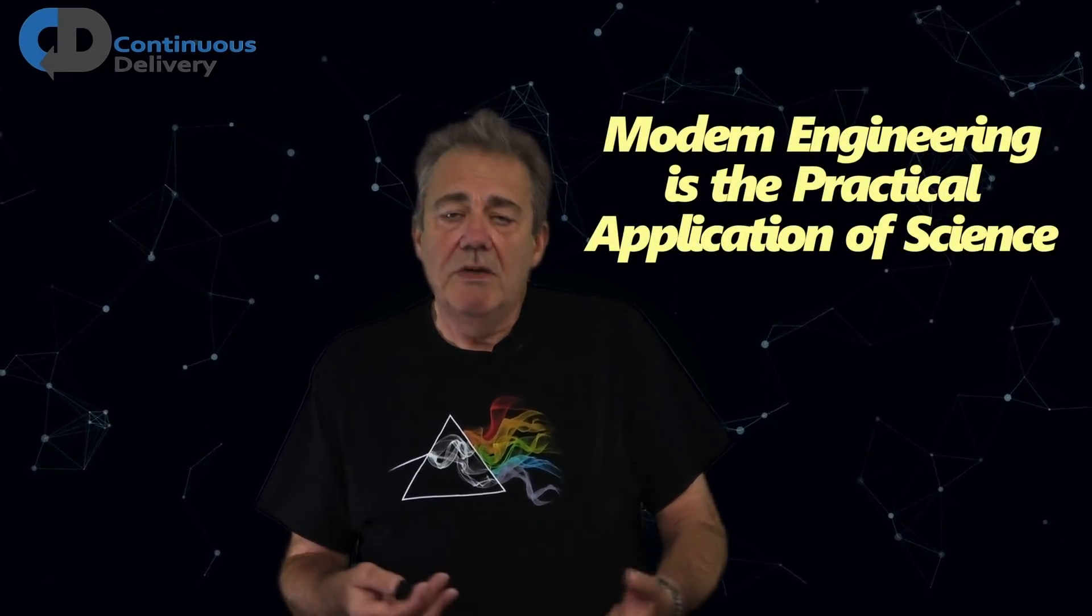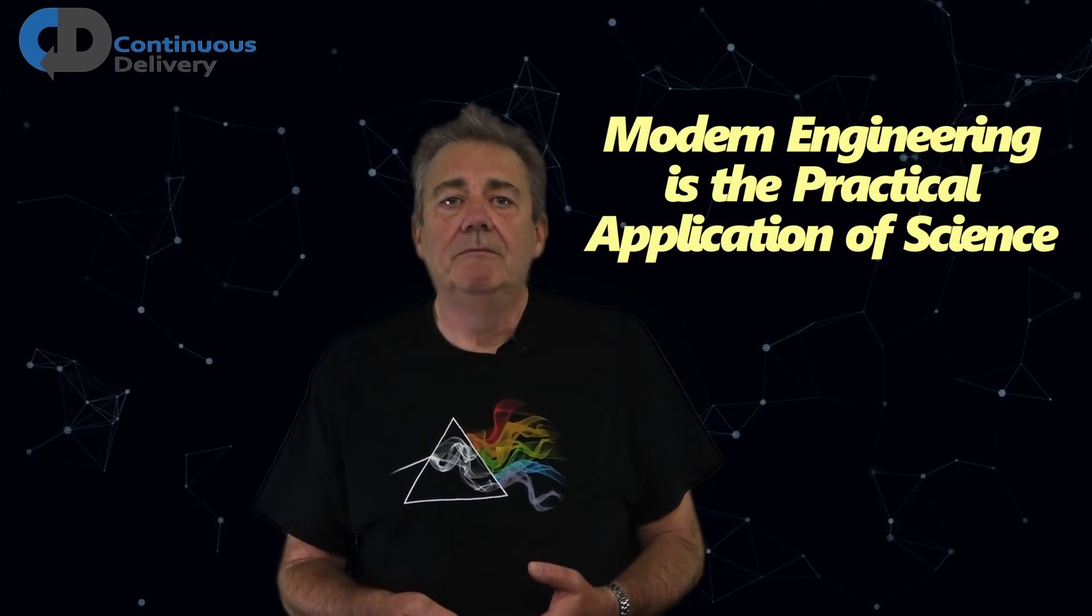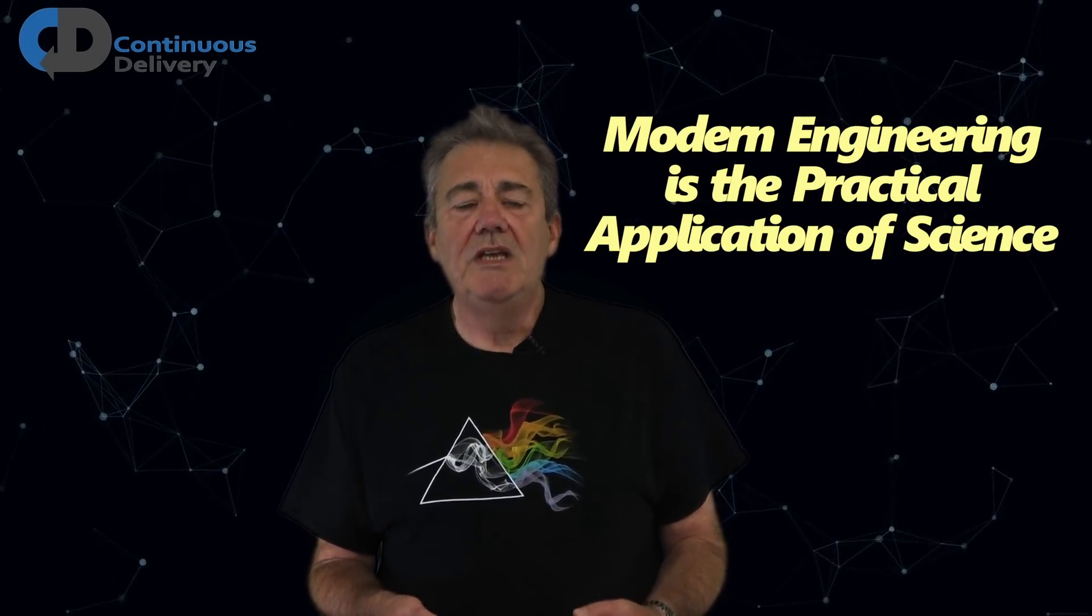Applying science to solving practical problems has a name. In other disciplines we call this engineering. I think that applying scientific-style reasoning to software to create an engineering discipline for software is the real post-agile move. And when we do this we will find that the agile manifesto is still completely correct. But an engineering approach will significantly improve our chances of achieving those values and principles in practice.